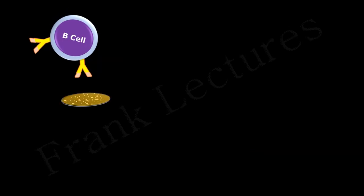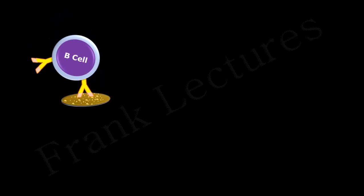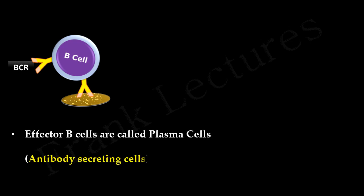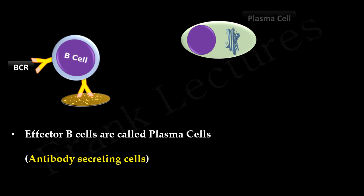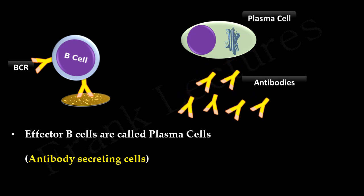This recognition occurs via specific receptors present on B-cells which are known as B-cell receptors. Once activated, these B-cells proliferate and differentiate into effector B-cells and memory B-cells. Effector B-cells are known as plasma cells which are antibody-secreting cells. They produce and secrete antibodies specific to the antigen recognized by the B-cell.